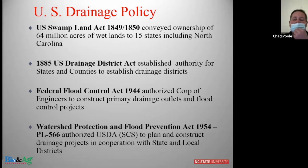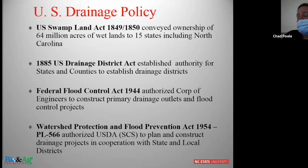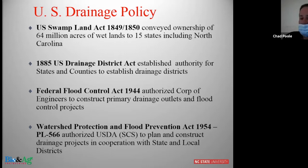In 1944 the federal flood control act was passed, authorizing the Corps of Engineers to construct primary drainage outlets and flood control projects. Most of that came about because of health issues with mosquitoes, but it really provided one of the big major networks for drainage in North Carolina. Finally, one of the biggest acts was PL 566, which funded many of the large drainage canals and outlets that we rely on for our drainage systems.